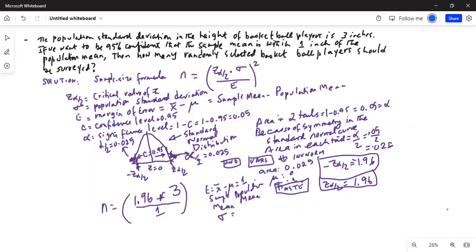Sigma is already given as 3, and z alpha by 2 we just found out is 1.96. How do I do this calculation? In the calculator, I will type it just like it is in the book, and you have to square it.